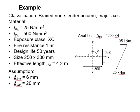Let's try this example to design a braced non-slender column bending in the major axis. The concrete strength is 25 N per mm squared, steel grade is 500 N per mm squared, exposure class XC1, fire resistance 1 hour, design life 50 years, and the column size is 250 by 300 mm. The effective length of the column is 4.2 meters.